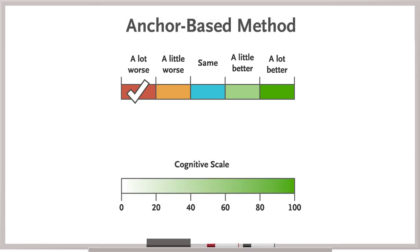For a cognitive function scale, investigators could consider surveying caregivers and family members to assess what change on a 100 point scale correlates with a noticeable difference in a patient's memory or level of independence.